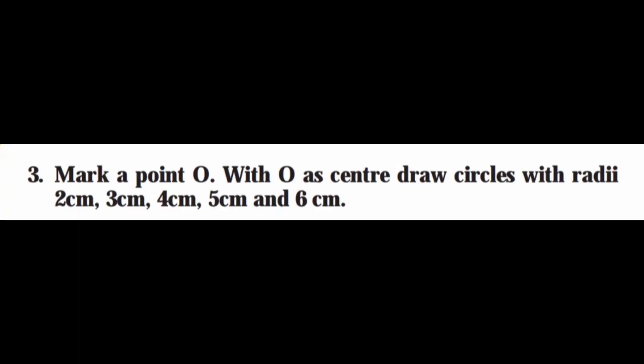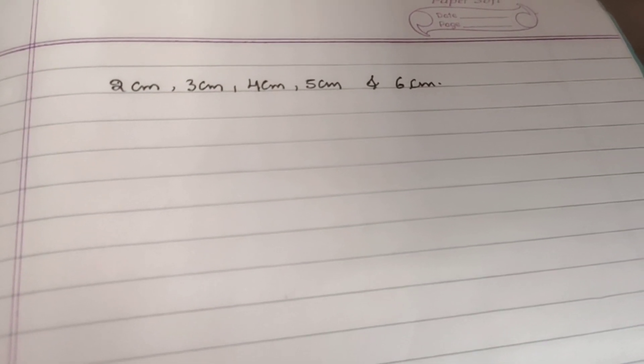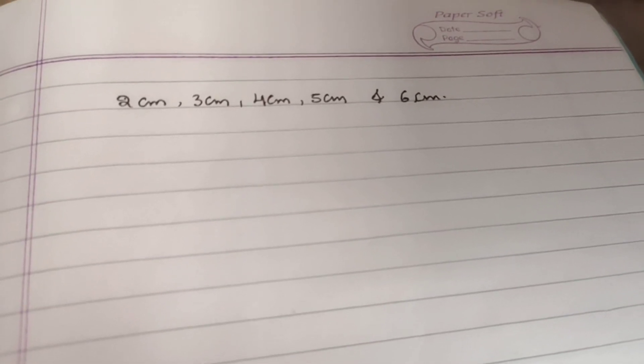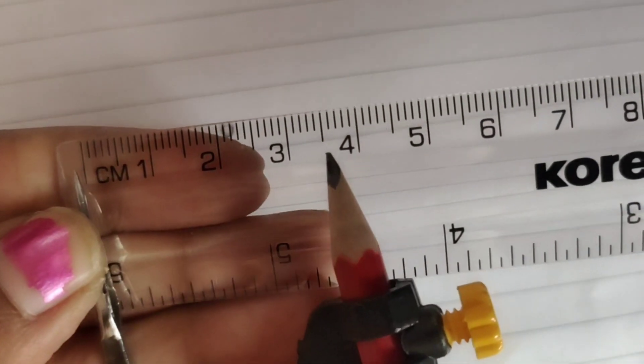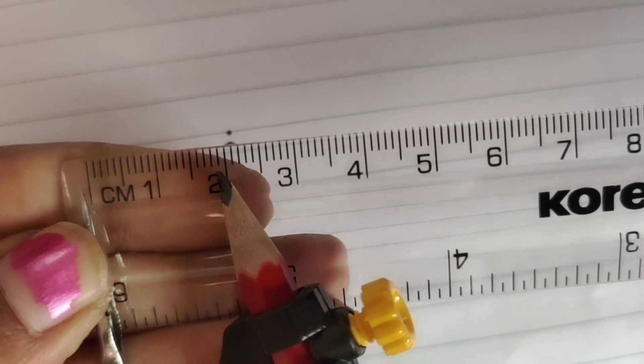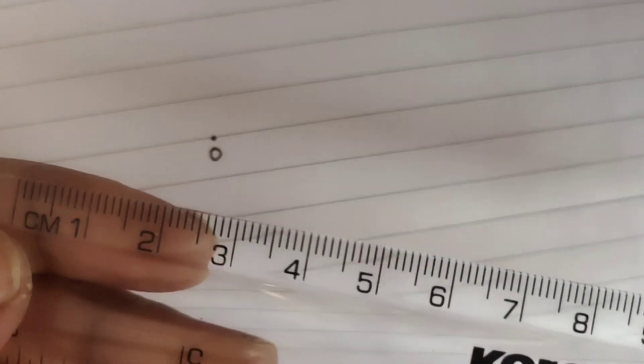Last question: mark a point O, with O as center, draw circles with radii 2 centimeter, 3 centimeter, 4, 5 and 6 centimeter. Let's draw the circles. Make a point O and keep it as center, so first two centimeter measurement.